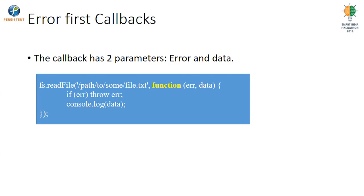This callback has two parameters: the error and the data. They are also referred to as error-first callbacks. The first parameter is always the error object — if some error has occurred, this object will be set with properties defining what the error was. If not, then the second object will be set, which is the data that has been read from the file. We can then access the data from the file by referring to that variable.